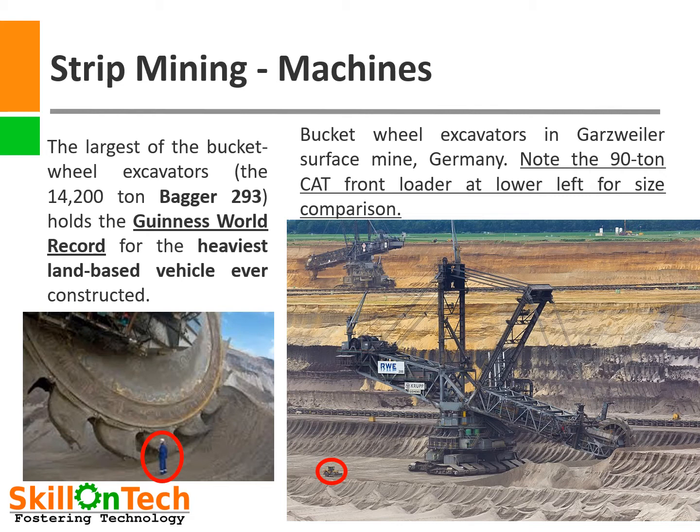Strip mining is done with the help of very large earth-moving machines. Bucket wheel excavator Bagger 293, weighing 14,200 tons, still holds the Guinness World Record for the heaviest land-based vehicle ever constructed. In the left picture you can see the relative size of the bucket wheel compared to an operator, and in the right photo the comparative size of a 90-ton loader against the overall dimensions of the machine.